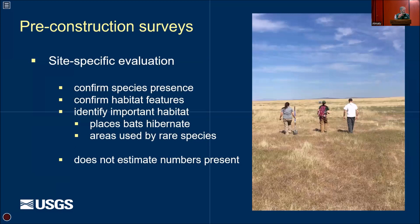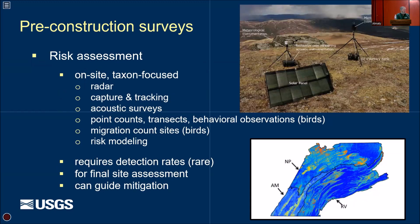Once a desk study has been conducted and the site meets certain standards, there can be a site-specific evaluation — a more in-depth assessment. It involves a visit, confirmation of species presence, and confirmation of habitat features, for instance places that bats hibernate or wetlands that might be used by a rare species. This site-specific evaluation does not count the number of individuals — that comes at the next step, the risk assessment.